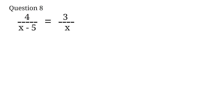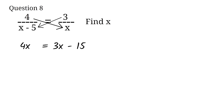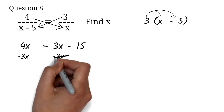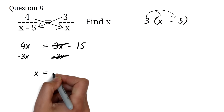Question 8: 4 divided by the quantity x minus 5 equals 3 divided by x. Find x. We are looking at rational equations, where the variable is in the denominator. The first step is to remove the fractions. We can cross multiply here. 4 times x is 4x. 3 times the quantity x minus 5 is 3x minus 15. Next, we isolate x by subtracting 3x from both sides. The 3x cancels out. 4x minus 3x is x. So x equals negative 15.